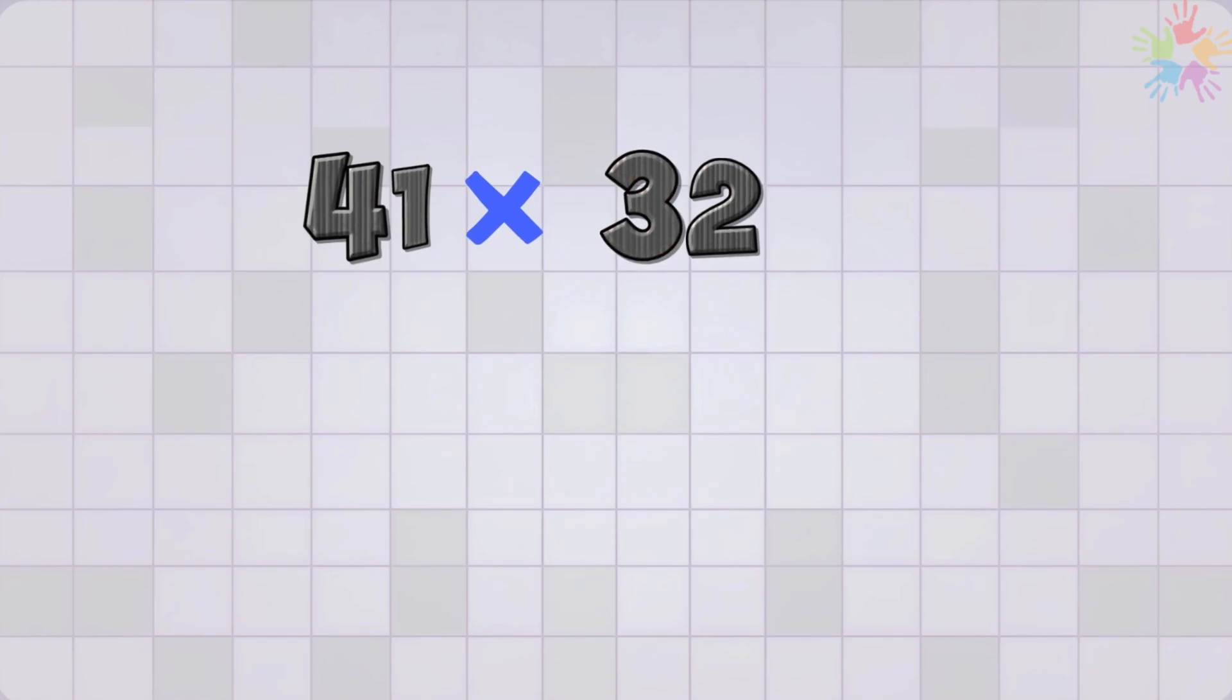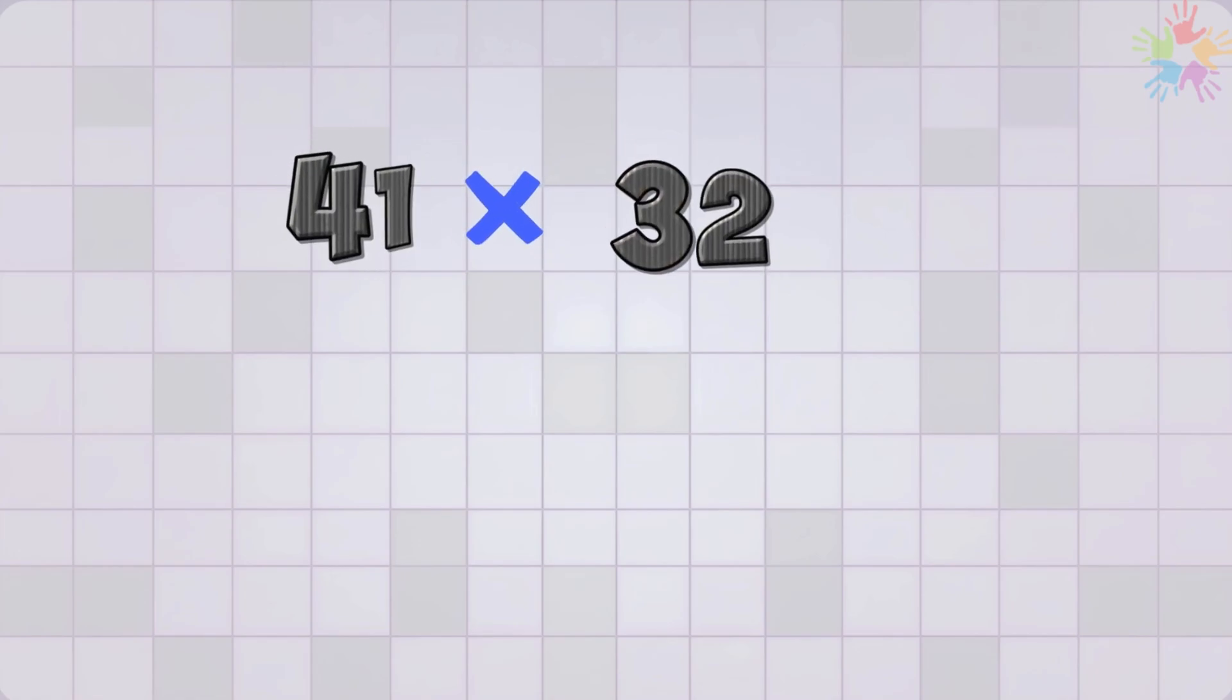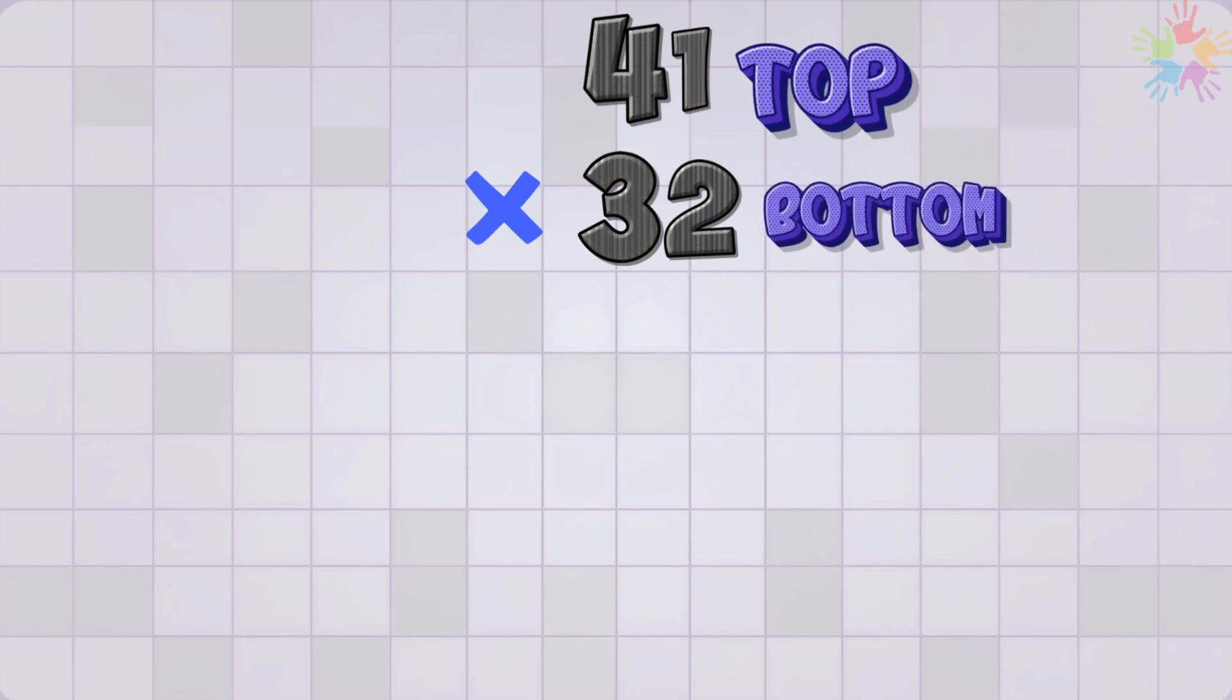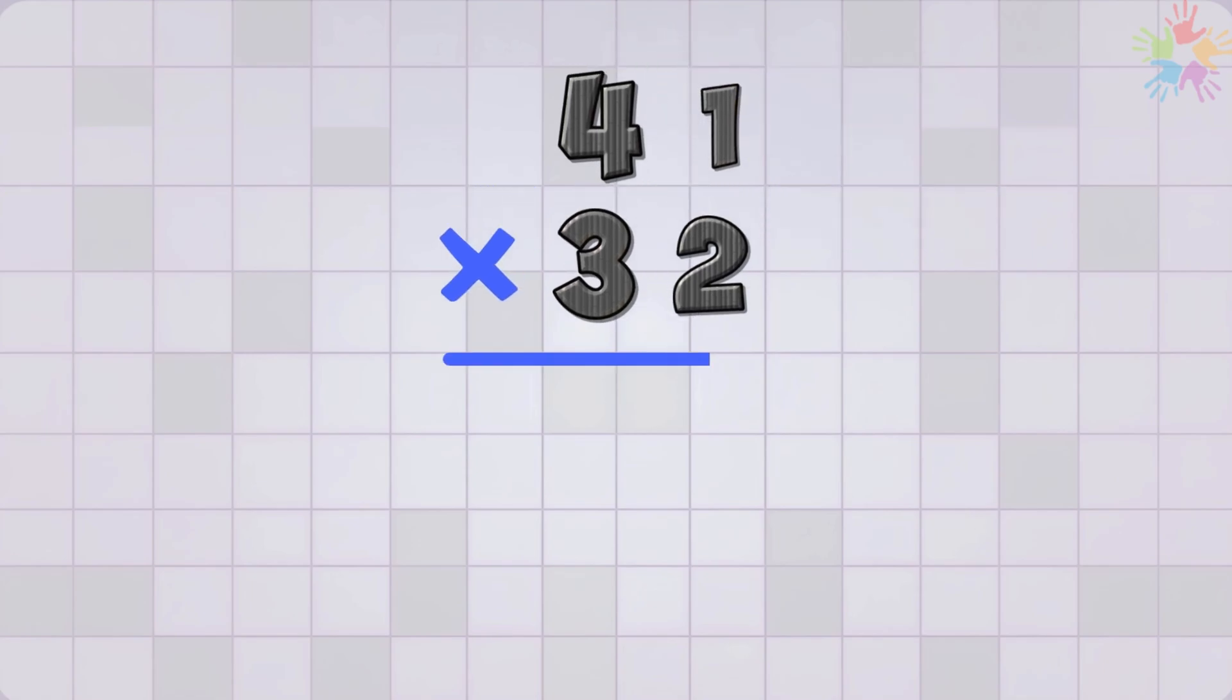And here is another one. 41 times 32. First, stack the numbers. Put 41 on top and 32 underneath. Then draw a line under it. That's where our final answer will go. Also, don't forget to add the multiplication sign so we know what we're doing. Now let's get to work.